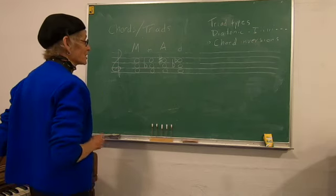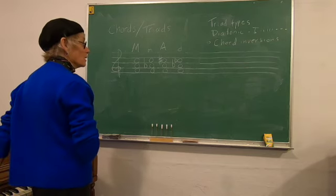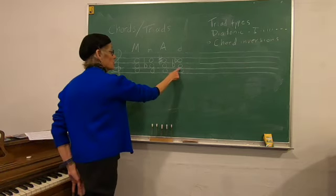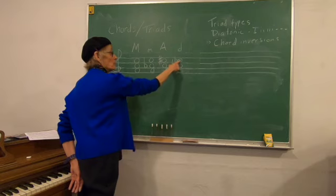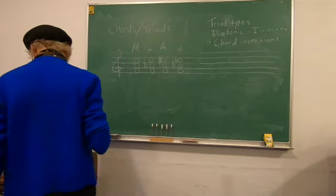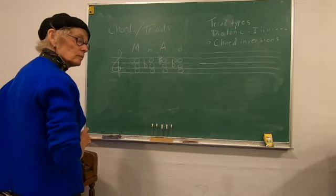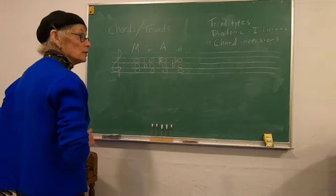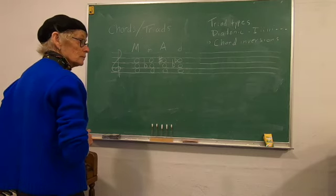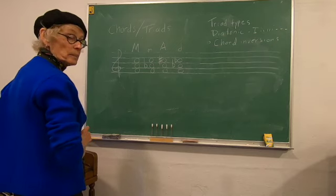And the next triad that we're going to show is a diminished triad, which has a minor third on the bottom and a minor third between three and five, or a diminished fifth between one and five. So we have major, minor, augmented, and diminished.